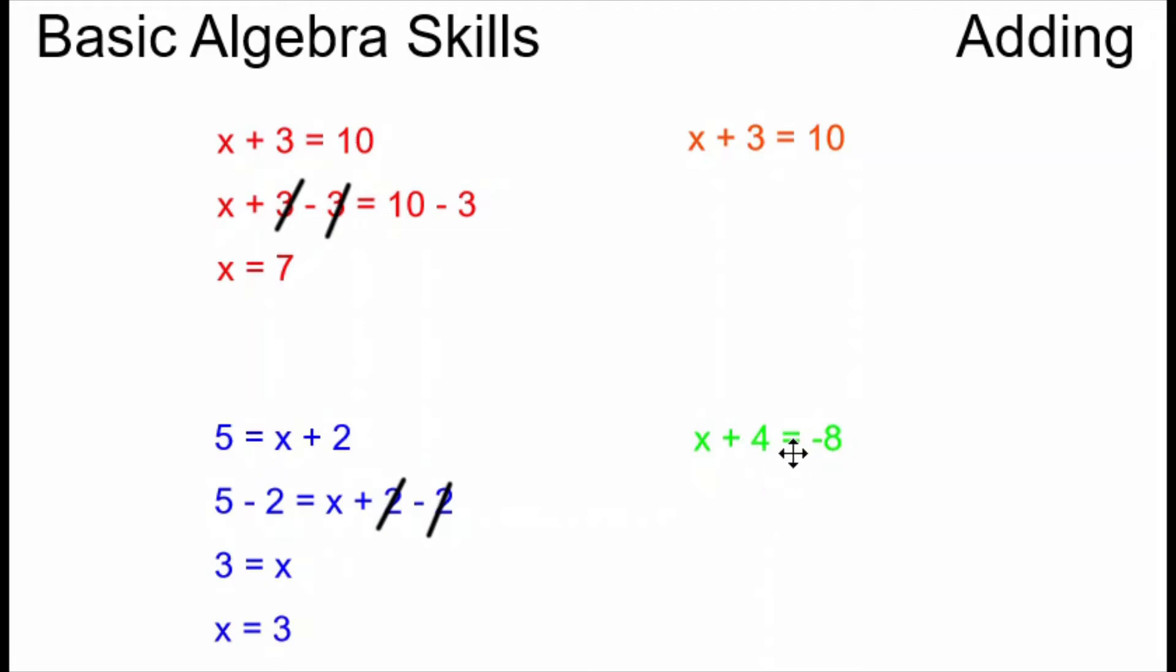Looking at this example on the bottom right again it's quite similar but this time I have a negative number involved. What I do is still the same. My x is on the left side and I want it to be alone. It has a 4 being added to it so I'm going to subtract a 4 from both sides.